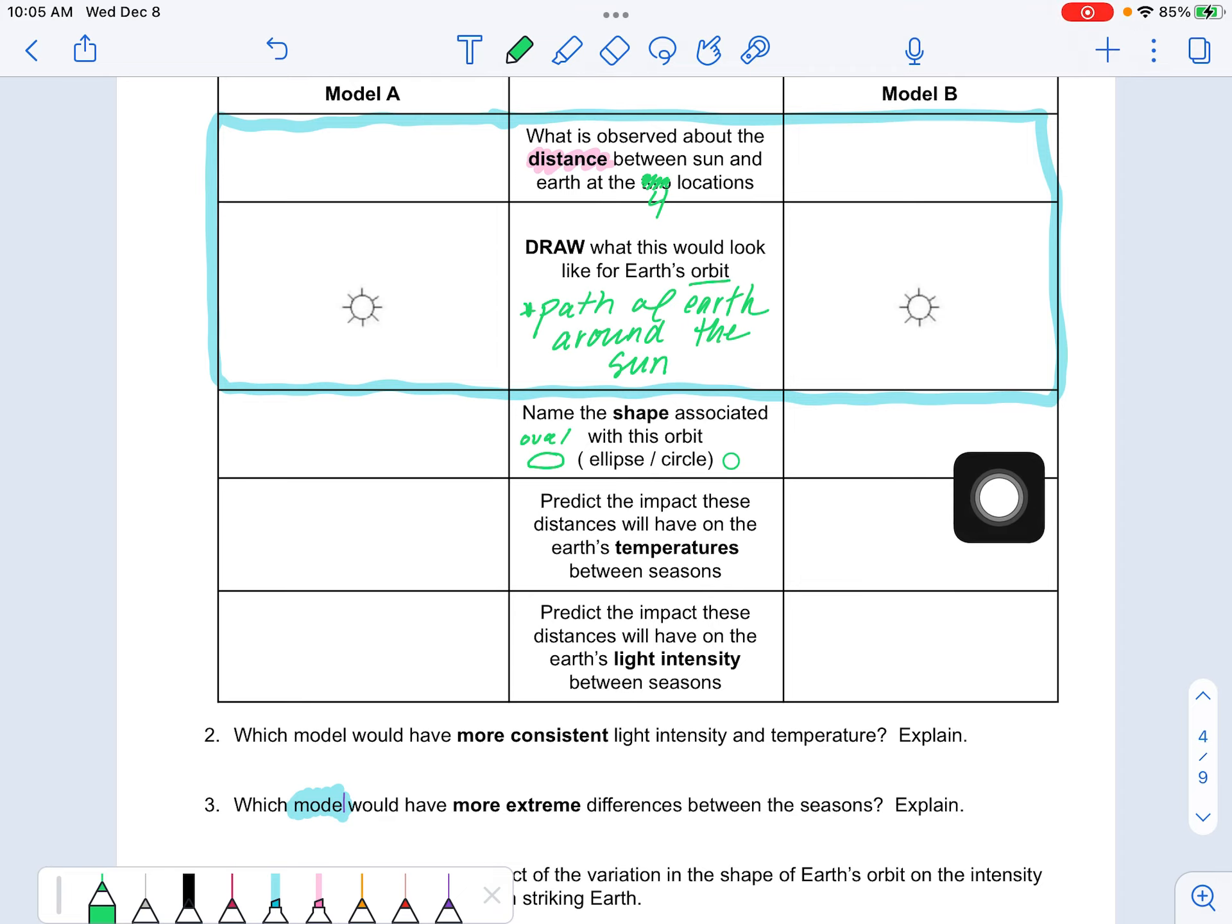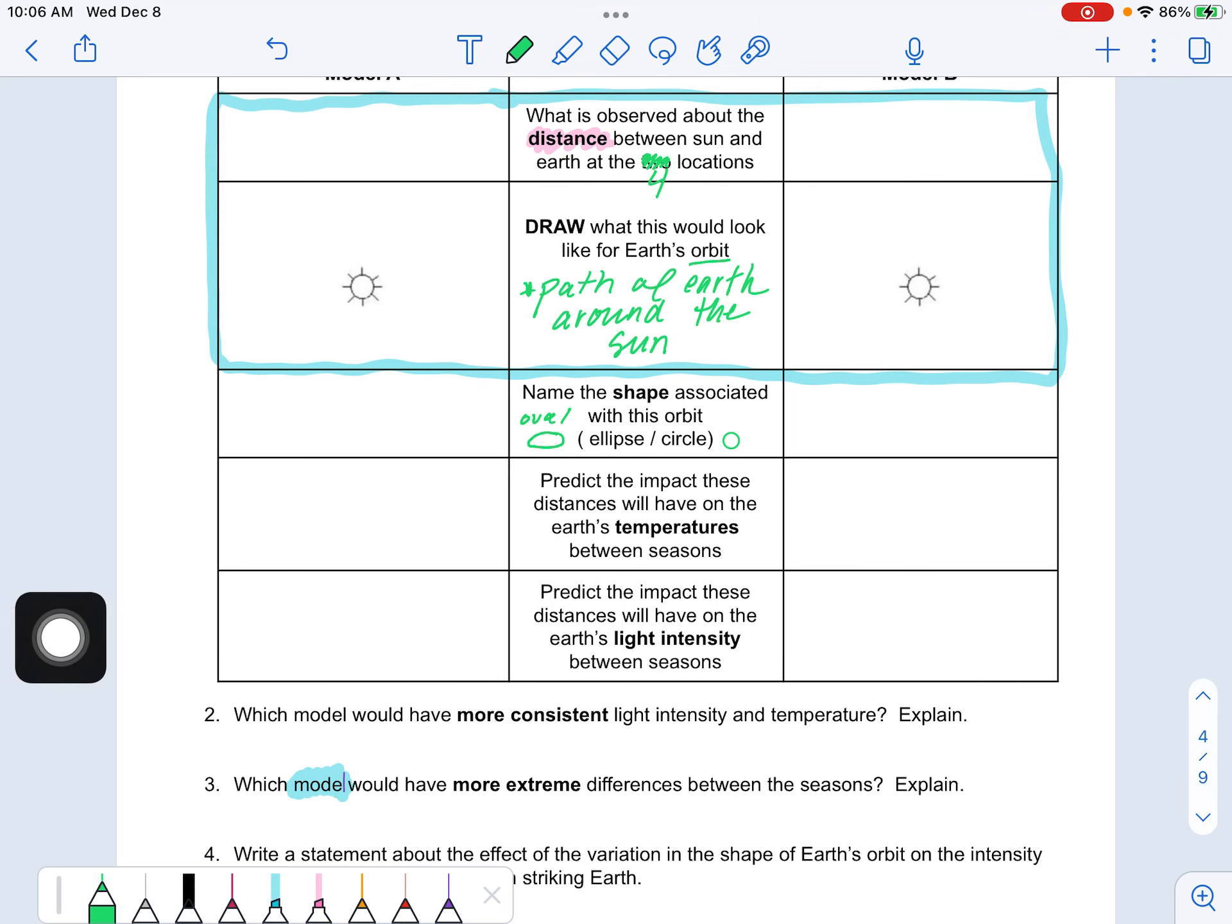Now based on what you've noticed in your diagrams then from the models, we should be able to do a little prediction on what's going on with temperature and light intensity in each one of those models. So when we think about between seasons, some of our key words might be like warmer and cooler or really similar, more consistent, more extreme. Those are the kind of observations that we're making here. And then intensity, kind of similar to yesterday, we're thinking about more concentrated or more spread out. So that's what our observations are going to be here.